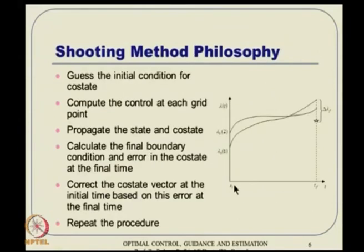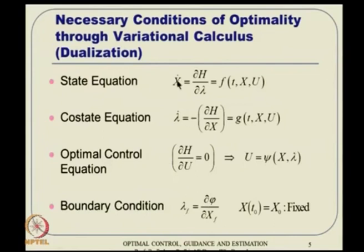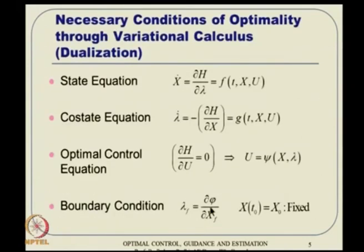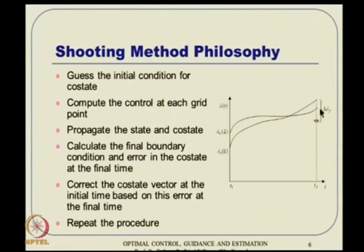The shooting method works as follows. We have the initial condition of the costate, which is not known. So we guess the initial condition of the costate. If we have that initial condition, the state and costate equations can be propagated forward together with respect to that guessed costate value at t₀. When t goes to t_f, the final value of lambda is somewhere, while the boundary condition gives something else. Utilizing this error, we update the initial condition lambda₀₁ to lambda₀₂ and repeat. The next iteration gets closer, and eventually it converges.